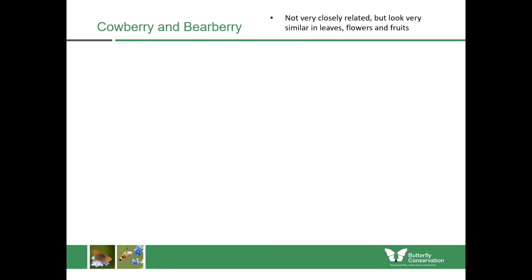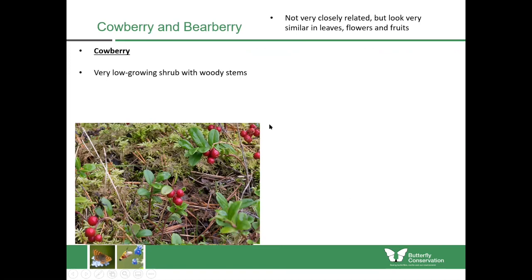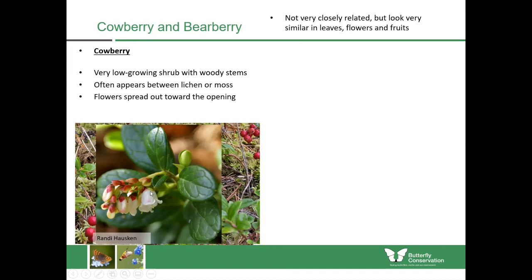Now we'll look at two very similar plants: cowberry and bearberry. They're not very closely related, however they have very similar leaves, flowers and fruits. Cowberry is a very low-growing woody shrub, sometimes seen growing over moss or other vegetation. The flowers spread out towards the opening, and the leaves tend to be a glossy green with clear grooves of veins on the upper surface. It produces red berries, very similar to the next plant.